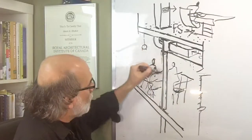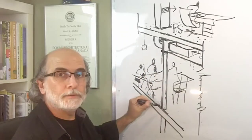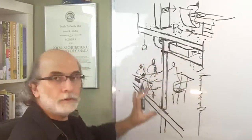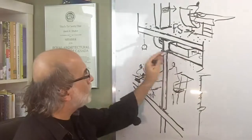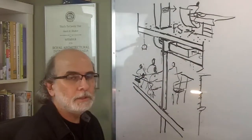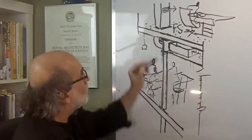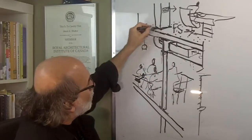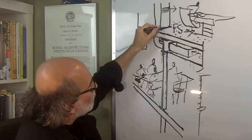the beam and the column supporting it is within one compartment. So any penetration to that beam does not require a damper, because we are not penetrating a fire separation.